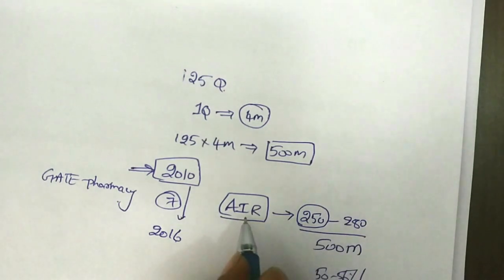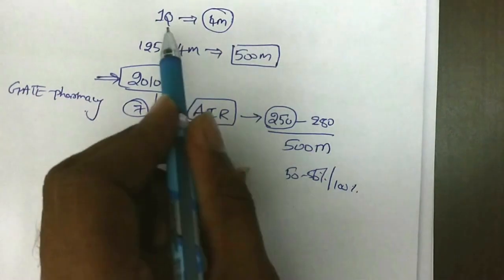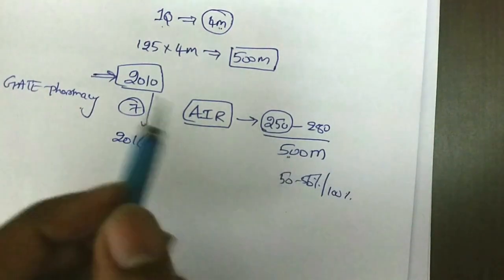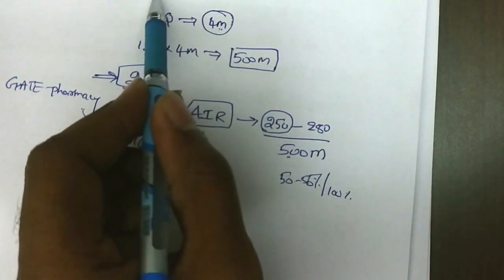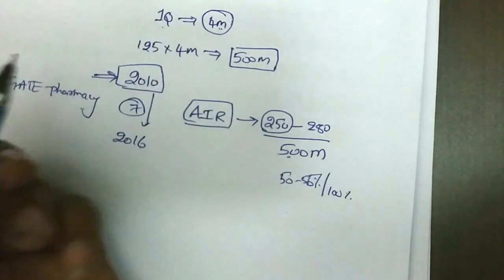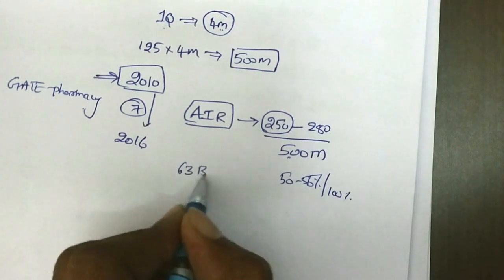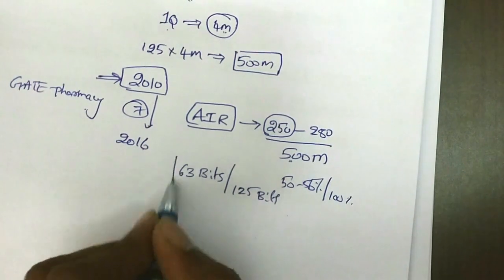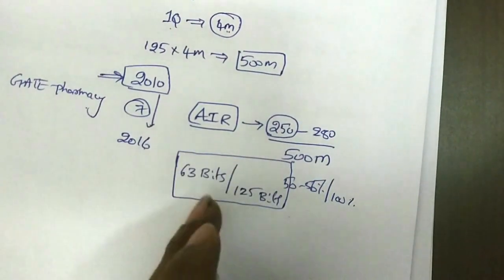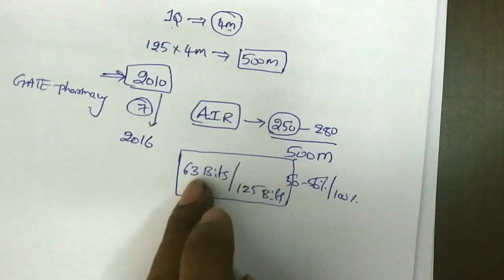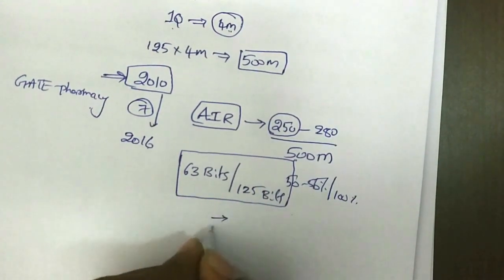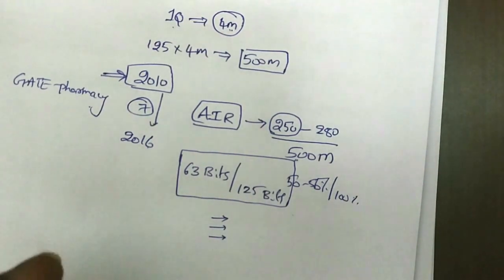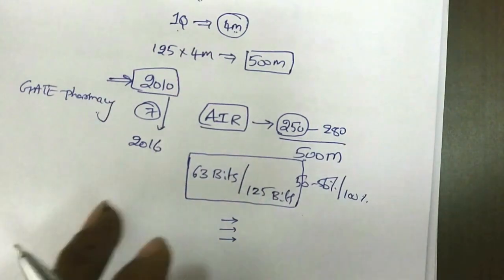For 250 marks, since one question carries four marks, half of 500 is 250, and half of 125 questions is about 62-63 questions. So if you pick the correct answer for 63 questions, you will be ranked in the top three positions — either first, second, or third — just 63 out of 125 questions.